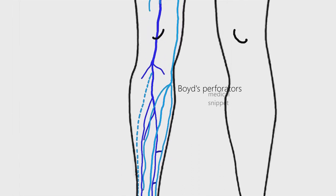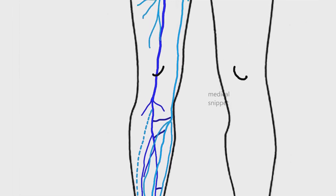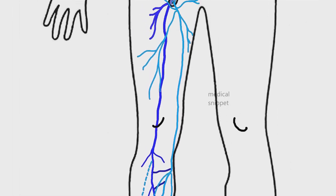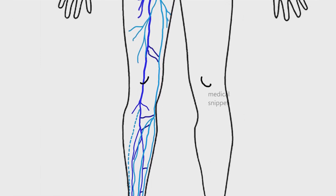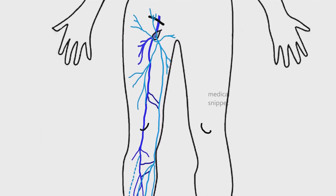Boyd's perforators are located just below the knee and connect the greater saphenous vein to the deep veins. In the thigh, the clinically important direct perforators are Dodd's perforators, which connect the greater saphenous vein to the femoral veins. This completes the lower limb venous system.